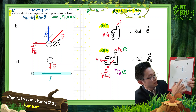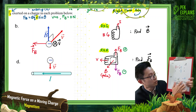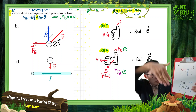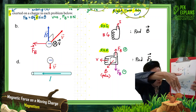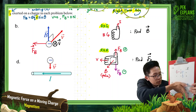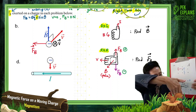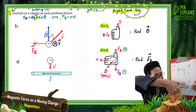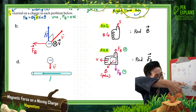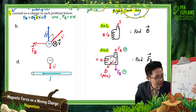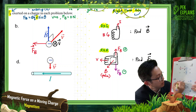The charge is above the conductor, so it experiences a magnetic field going into the page. Now applying the right-hand rule for force: velocity downward, palm into the page — my thumb points to the right. But it's a negative charge, so the force is opposite the thumb. The force is going to the left.